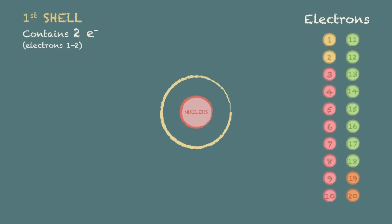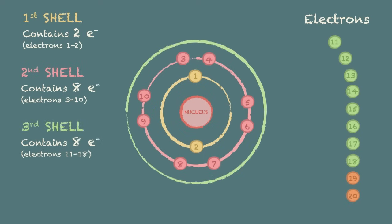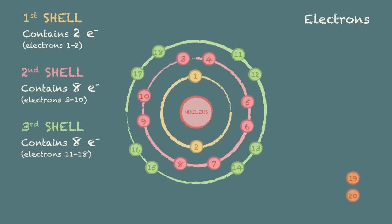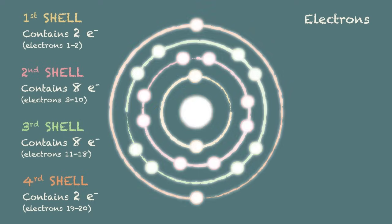The first shell can contain a maximum of 2 electrons. The second shell up to 8 electrons. The third shell also has a maximum of 8 electrons. And the 19th and 20th electrons go into the fourth shell. And this would actually represent a calcium atom.